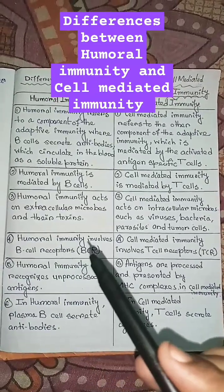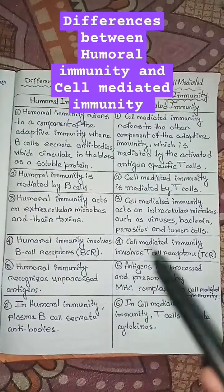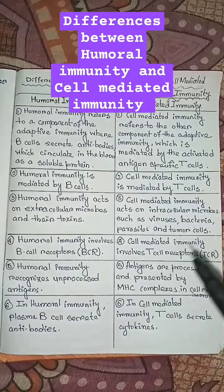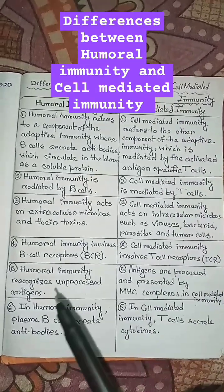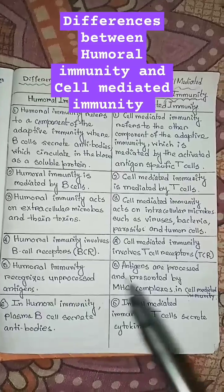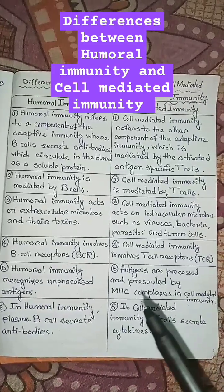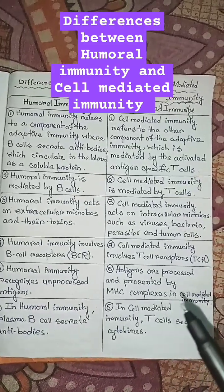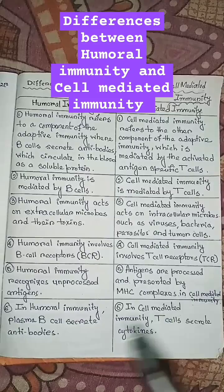Humoral immunity involves B-cell receptors but cell-mediated immunity involves T-cell receptors. Humoral immunity recognizes unprocessed antigens, but antigens are processed and presented by MHC complexes in cell-mediated immunity.